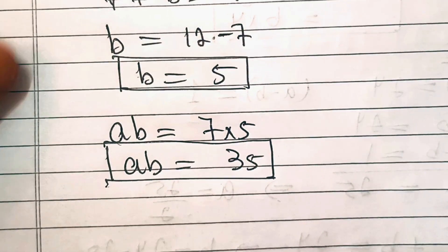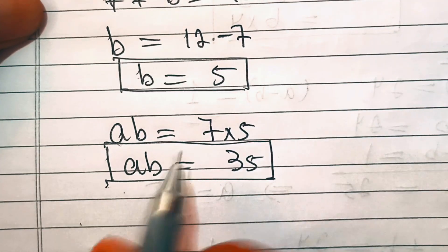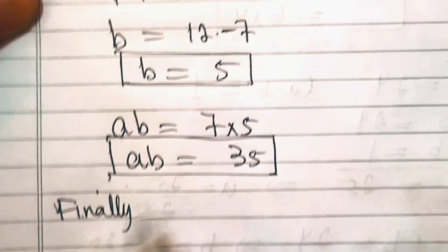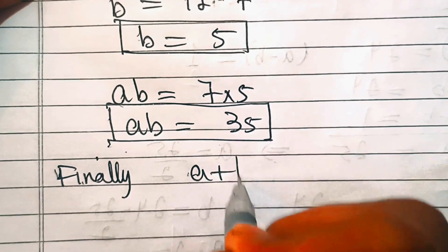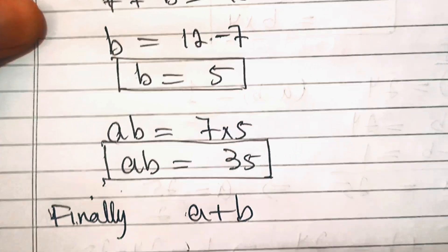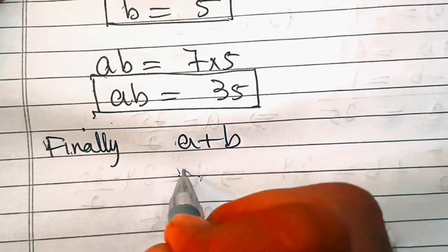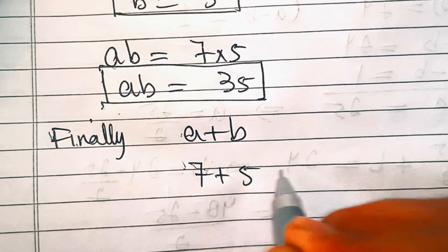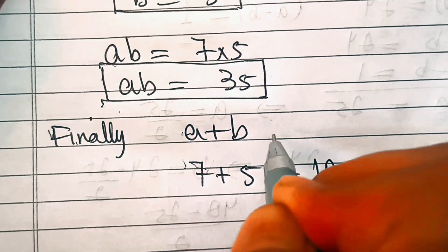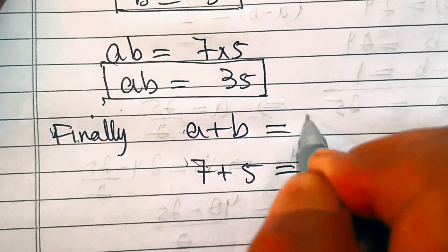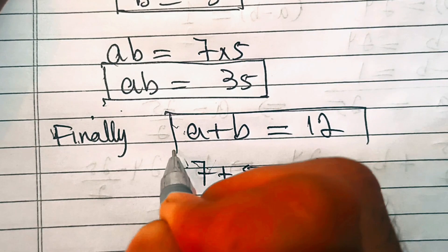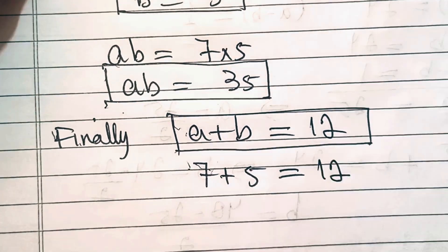So that means, finally, we can find the value of a plus b. We have 7 plus 5, which equals 12. So a plus b equals 12, and that is the answer to this problem.